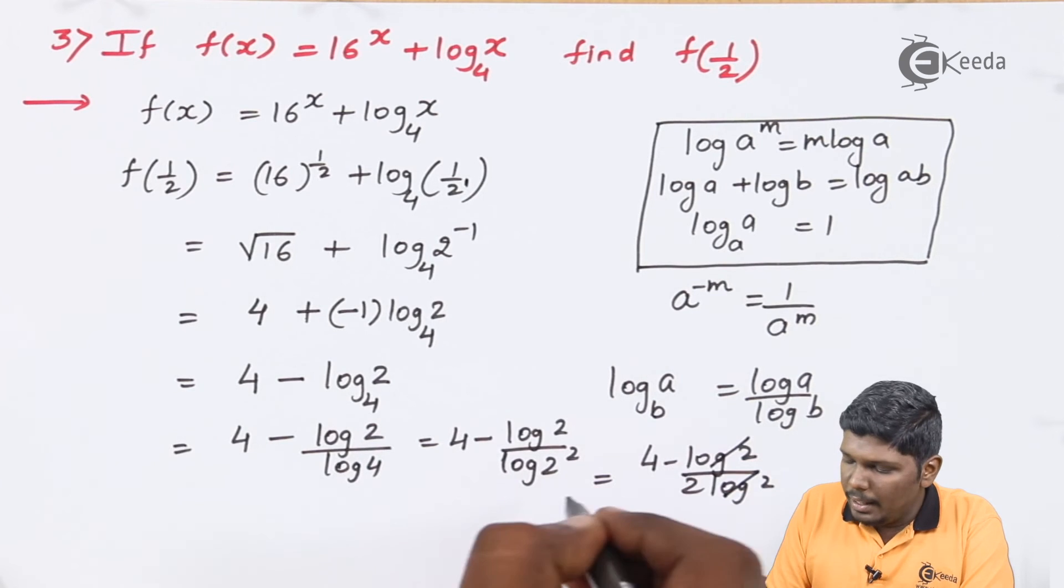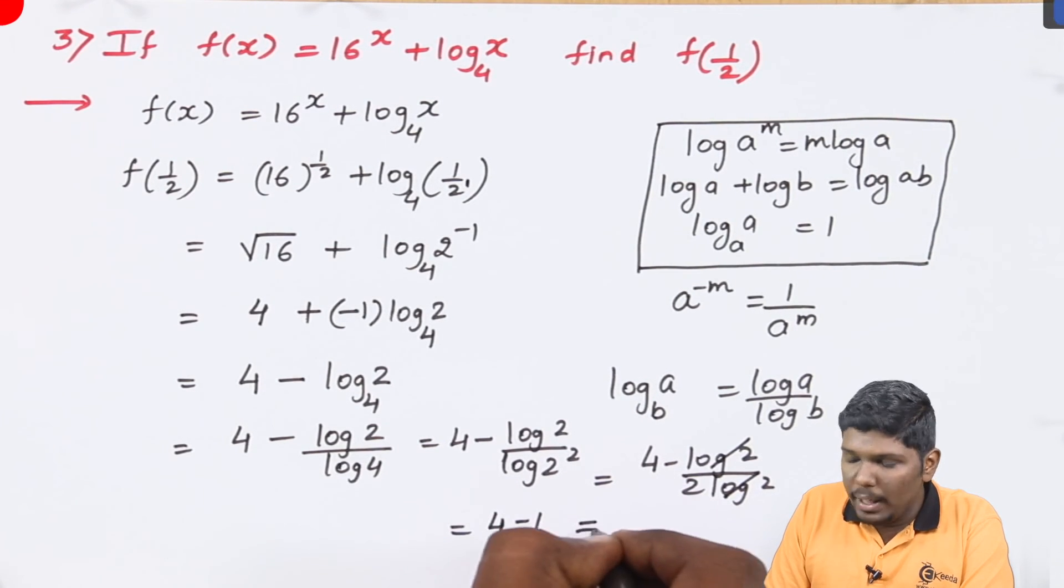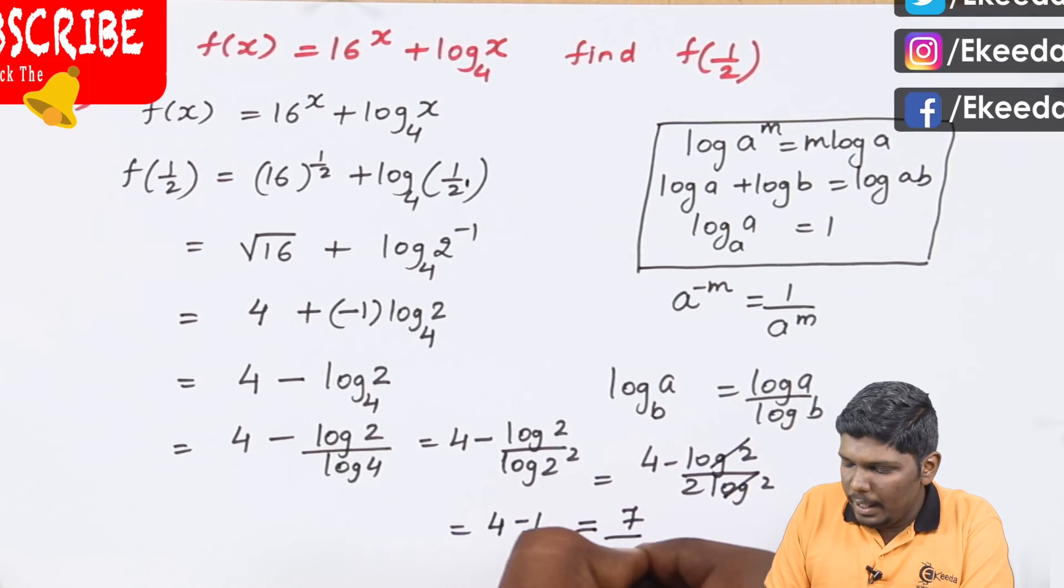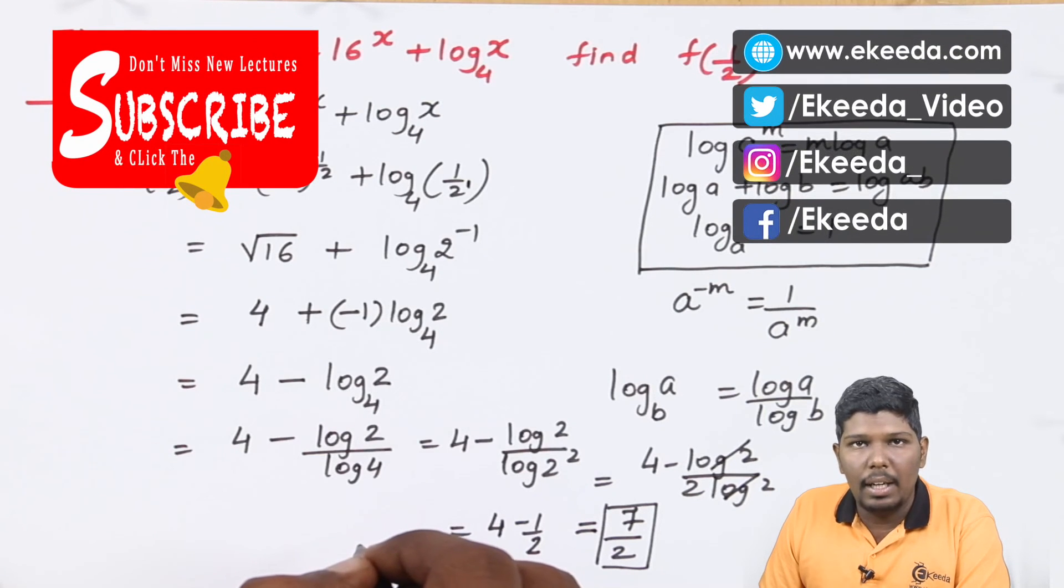So log 2 will be cancelled and the remaining part is 4 minus 1/2. 4 minus 1/2 is nothing but 7/2. So this is the value of the given mathematical expression.